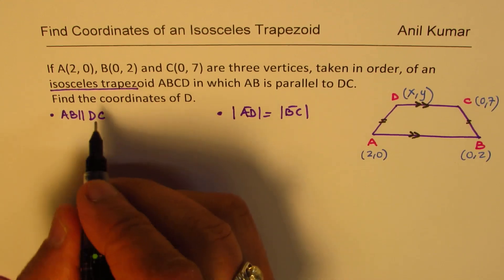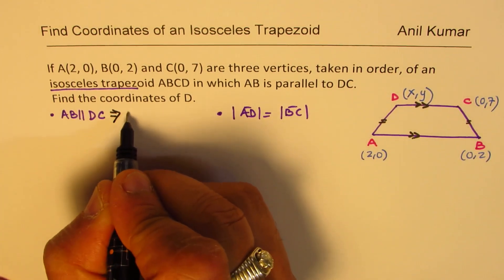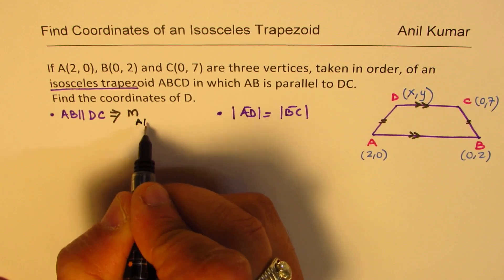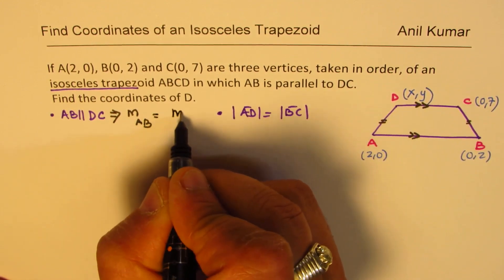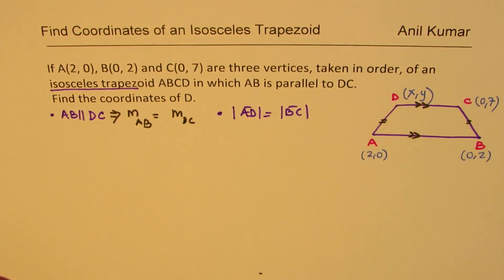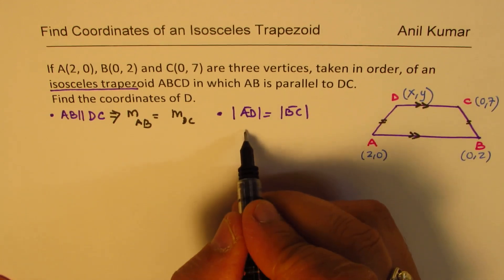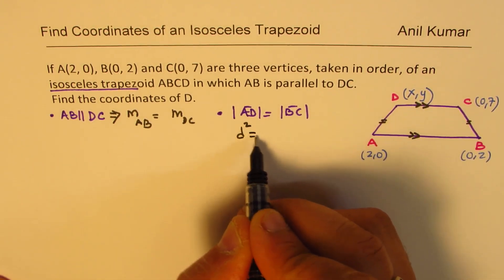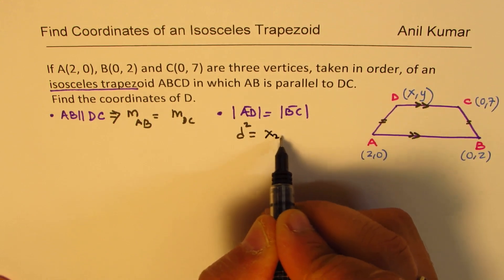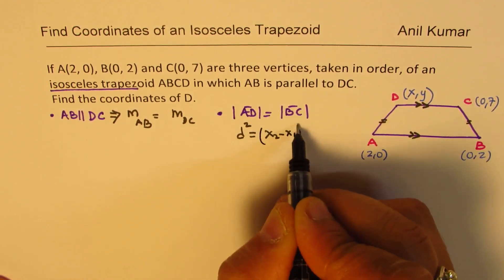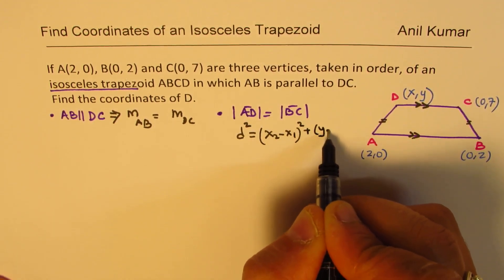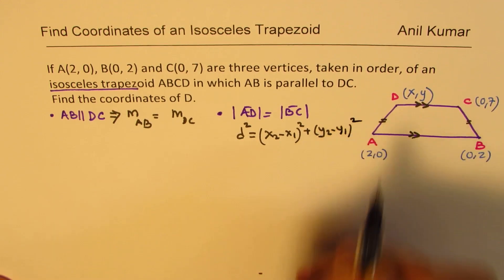When we say parallel, it basically implies that the slope AB is equal to slope DC, right? Magnitude means the square of distance also will be same. So we could use the formula, which is (X2-X1)² plus (Y2-Y1)².